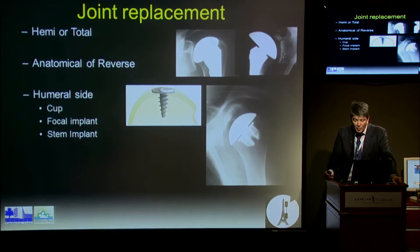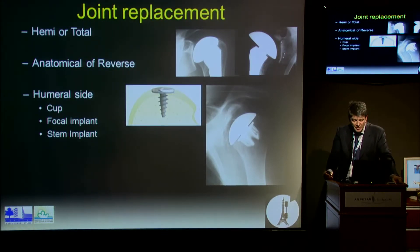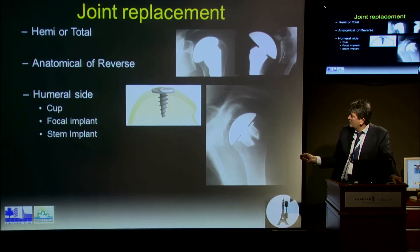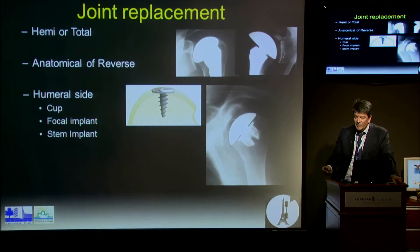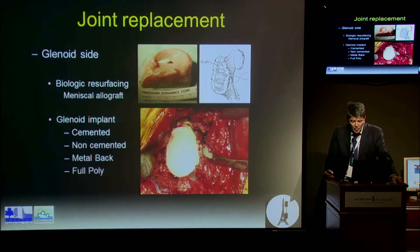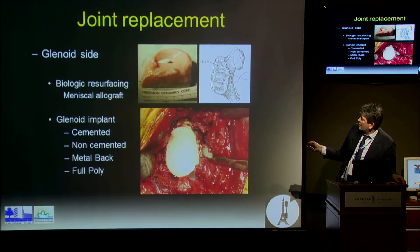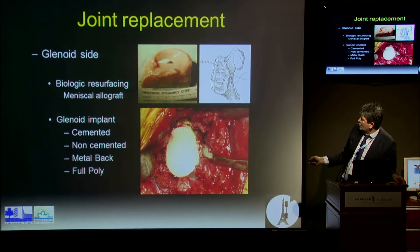For joint replacement prosthetics, you can use a hemi, a total, an anatomic replacement, or a reverse replacement. For the humeral side, you can use a partial implant, a focal implant, a cup, a stem implant, or this new generation of stem-free implants, which have the same fixation without any stem. For the glenoid side, there have been proposals not to put any implant — using meniscal allograft, or a flap of fascia lata or iliotibial band — or you can use a glenoid implant, which can be cemented or non-cemented, metal-backed, or full polyethylene.